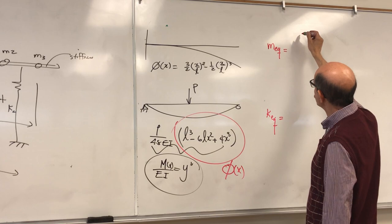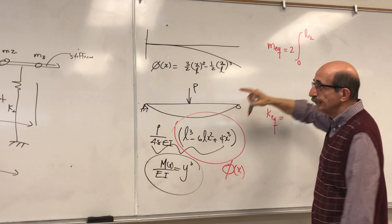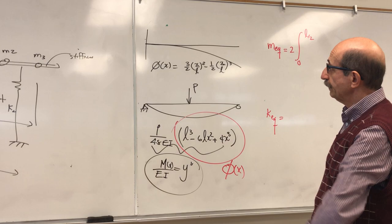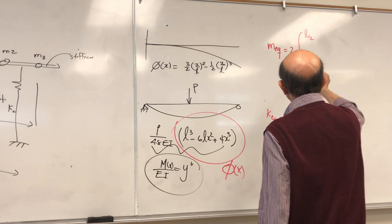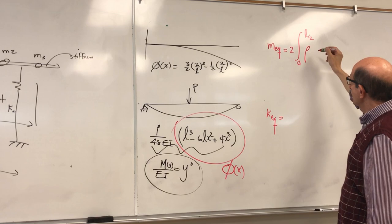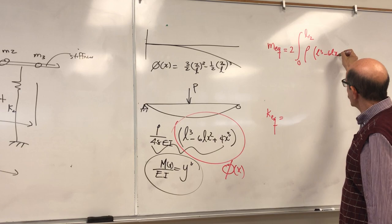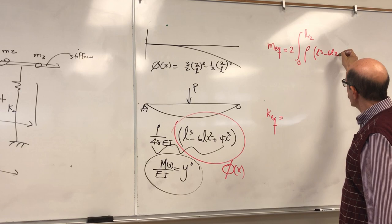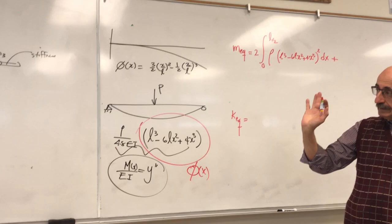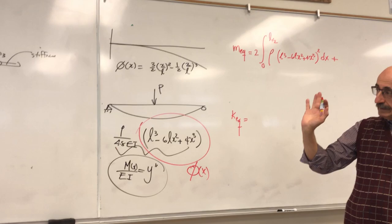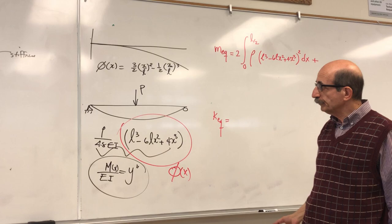For the equivalent mass calculation, we use symmetry: 2 times the integral from 0 to L/2. Since rho is constant, we square phi(x) = L^3 - 6Lx^2 + 4x^3 and integrate. For the concentrated mass, since we placed the origin at the center, the mass is located at x = 0, so phi(0) = L^3, and the lumped mass term becomes m·L^6.